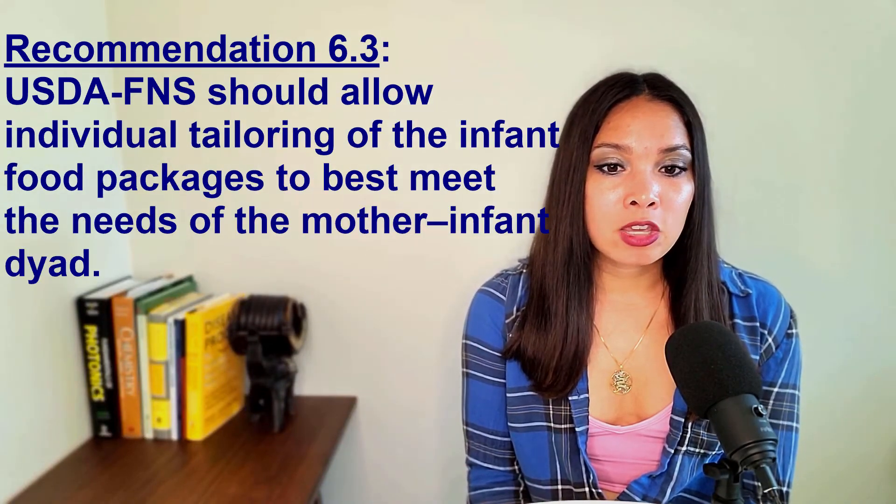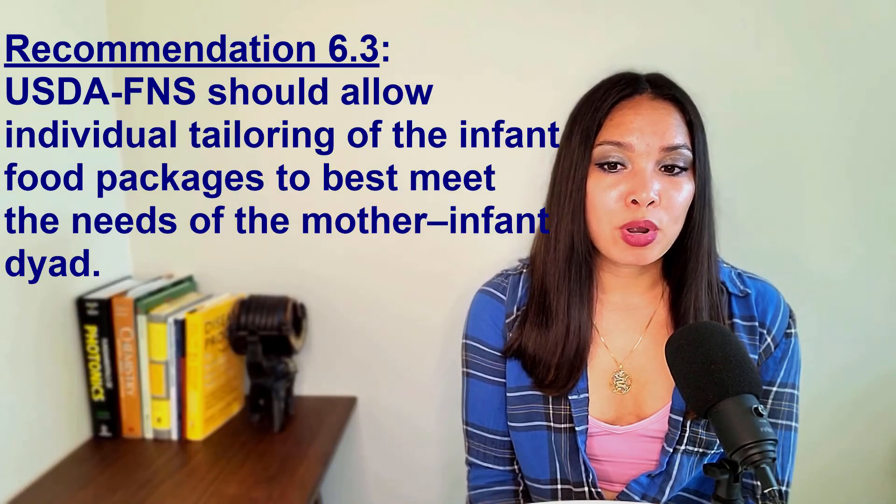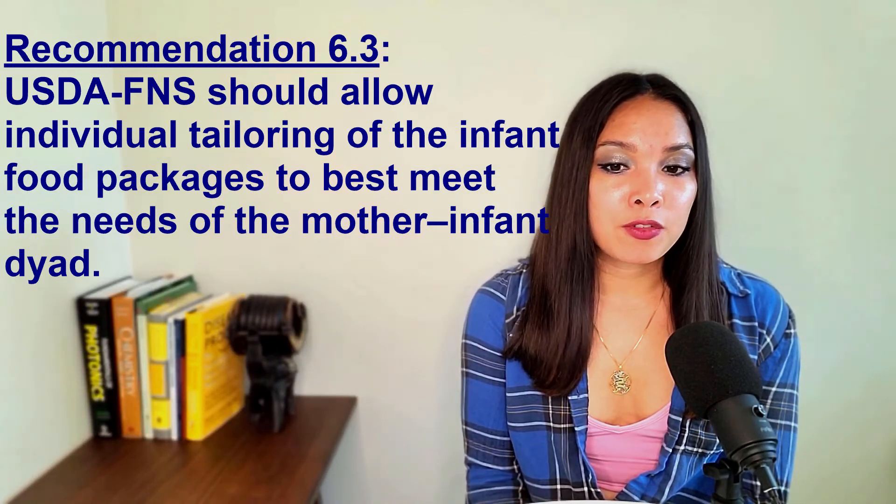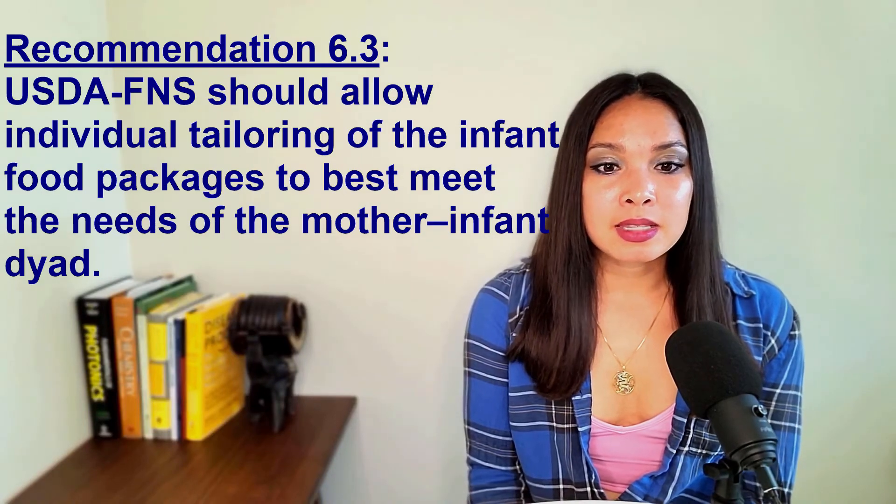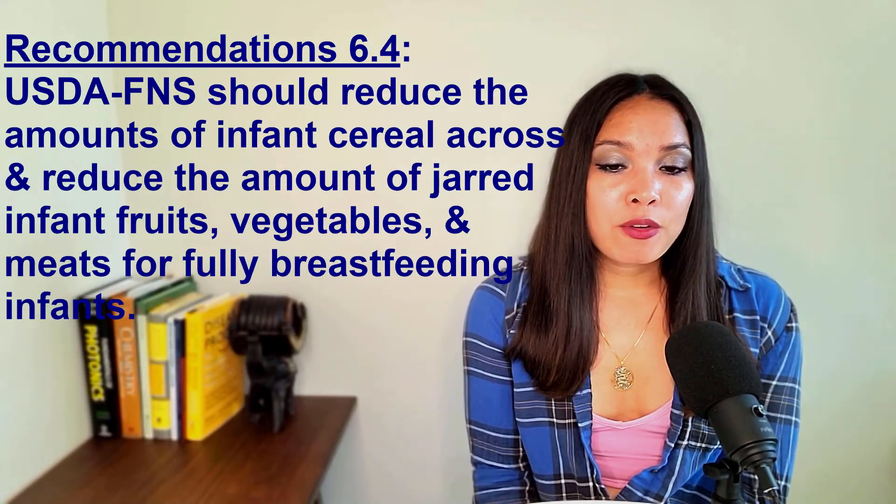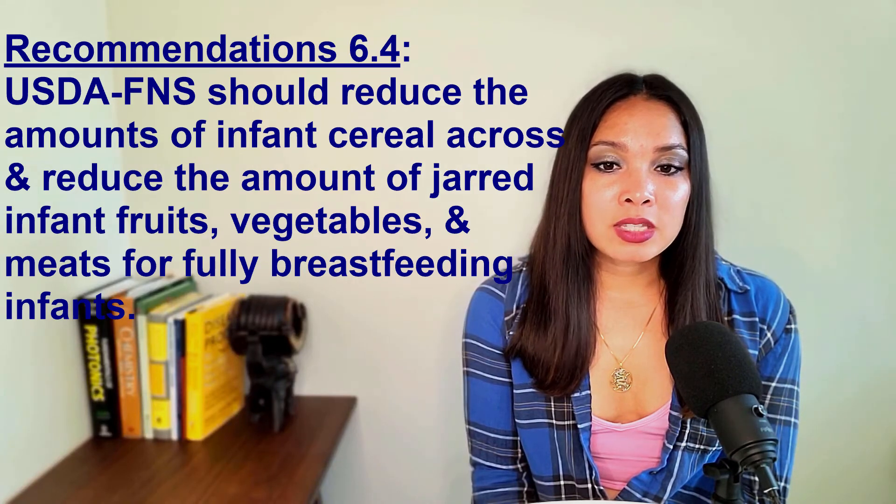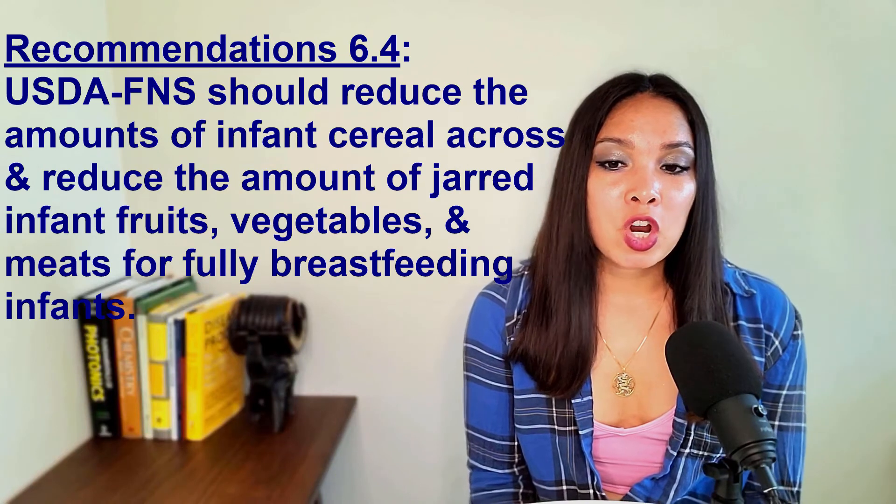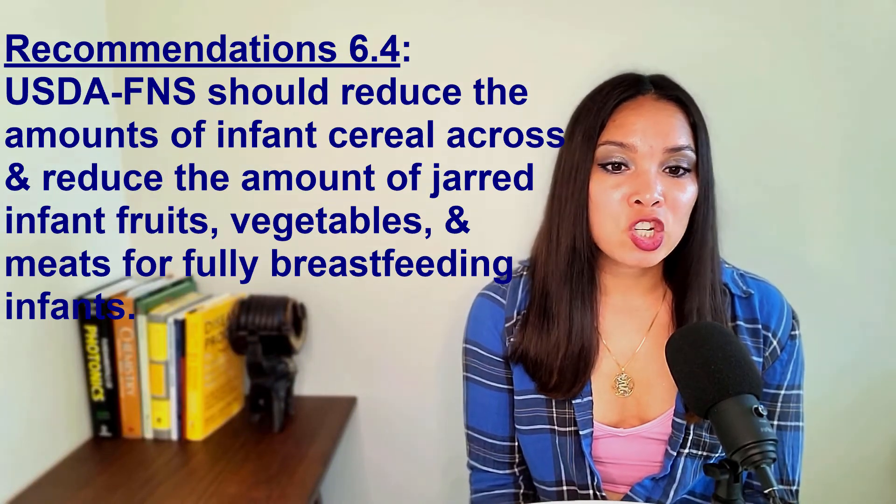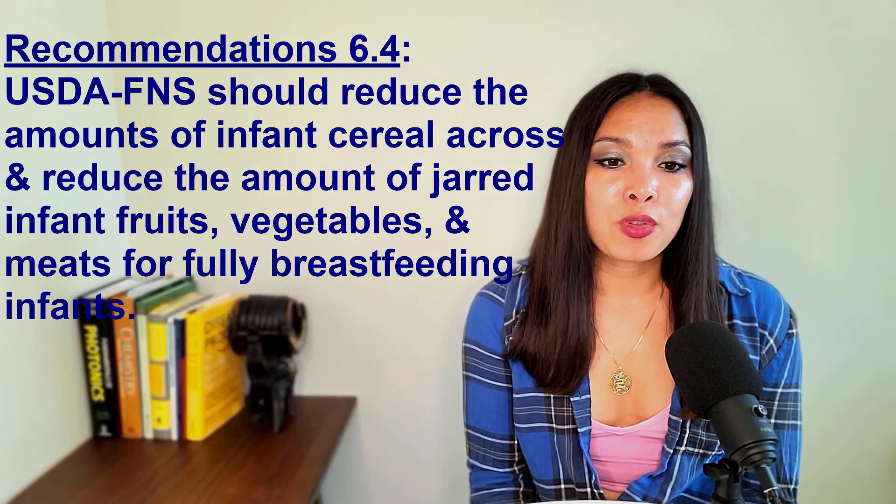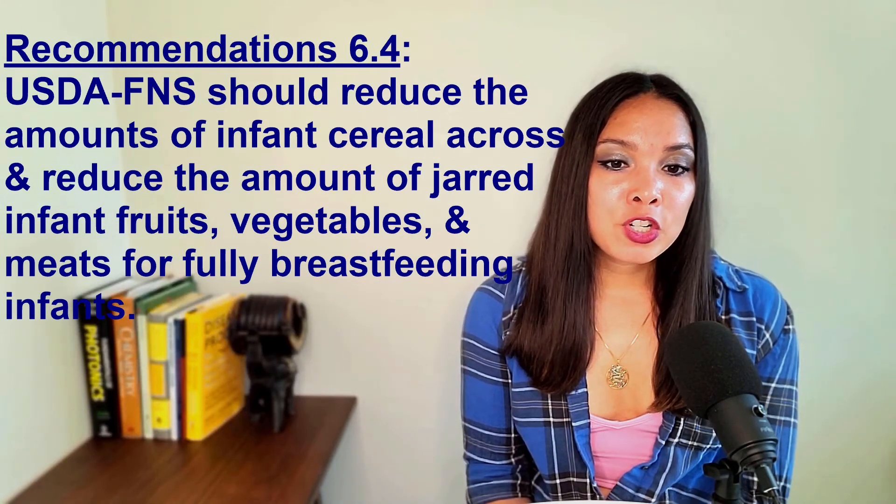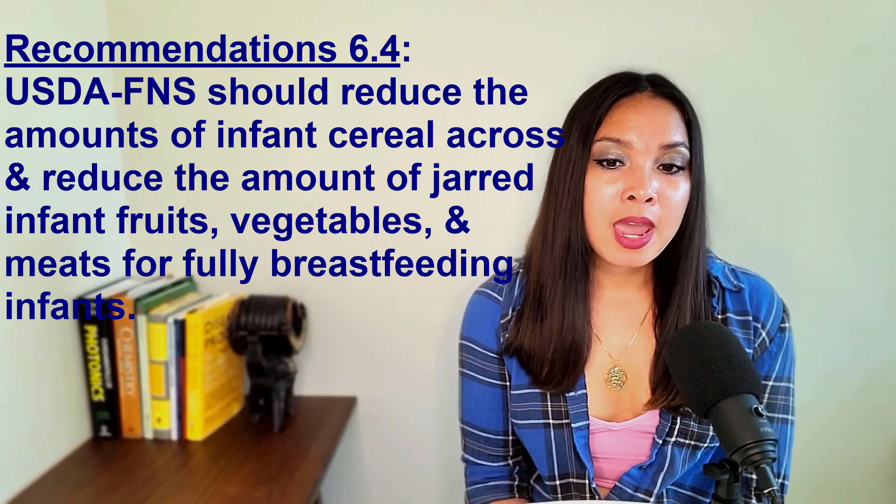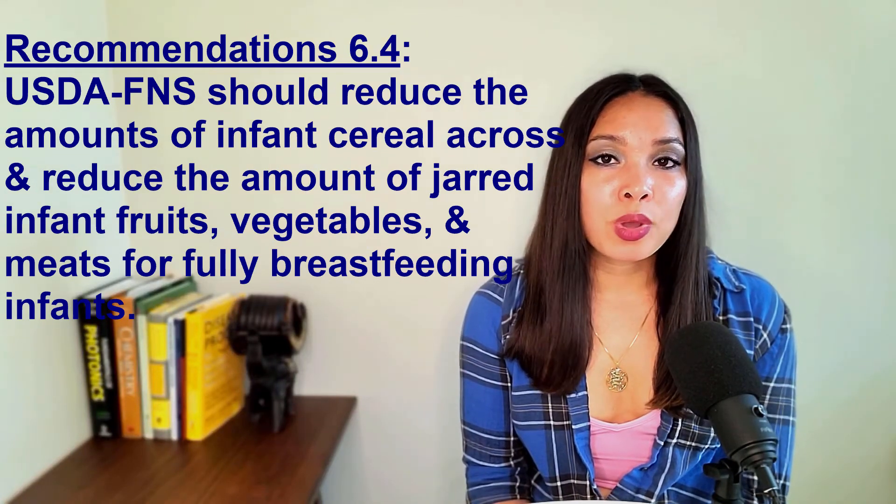Recommendation 6.3 states that USDA's FNS as a means of supporting breastfeeding of any duration and intensity should allow individual tailoring of the infant food packages to best meet the needs of the mother-infant diet. And recommendation 6.4 states that USDA's FNS should reduce the amounts of infant cereal across infant food packages and reduce the amount of jarred infant fruits and vegetables and jarred infant meats provided in the food packages for fully breastfeeding infants. Caregivers should be permitted to substitute all or part of the jarred infant fruits and vegetables with a CVV and a portion of jarred infant meat with canned fish.